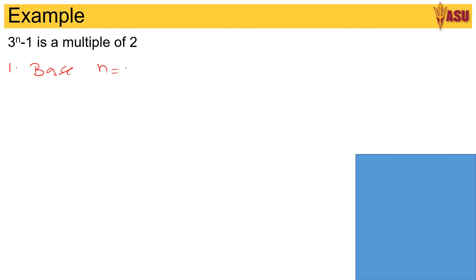n is equal to 1. So when n is equal to 1, it is 3^1 minus 1, which is equal to 2. This is proved because 2 is divisible by 2.